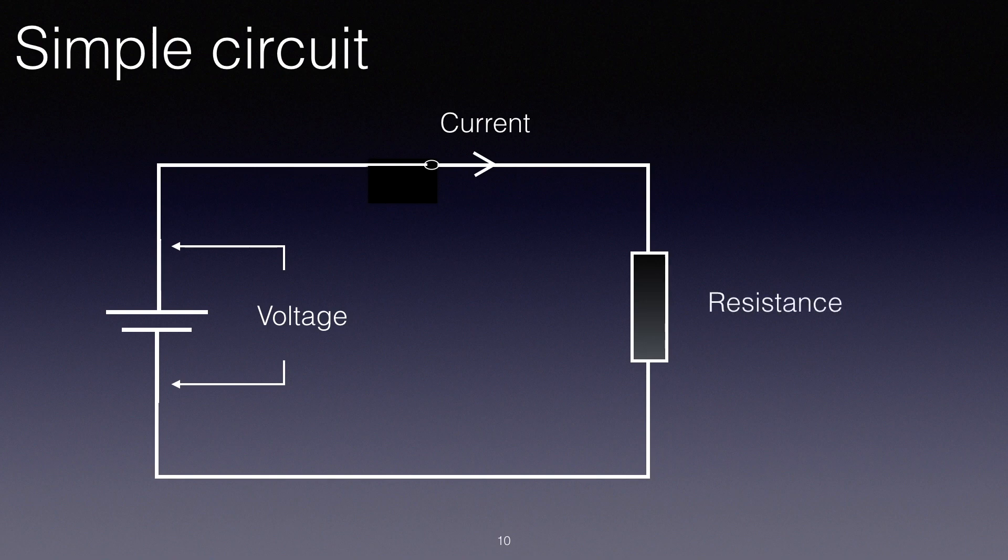That current is flowing through and being opposed by a resistance, because resistance is the opposition to current flow. If you remember, in one of the previous videos,